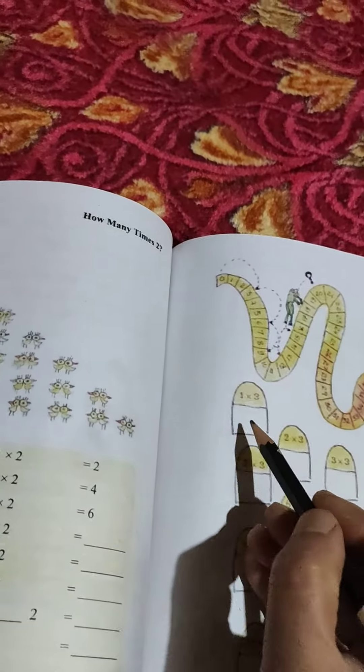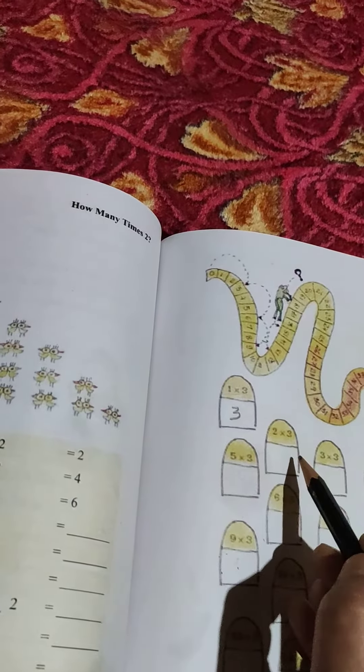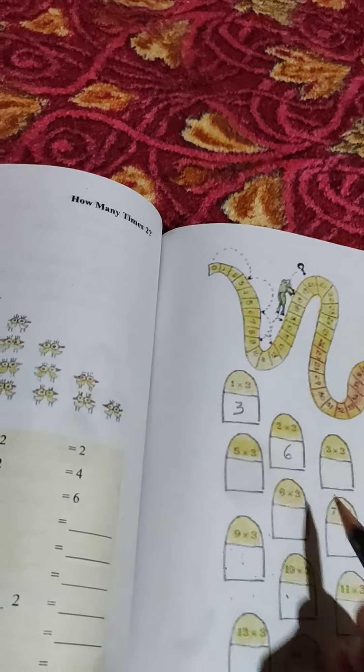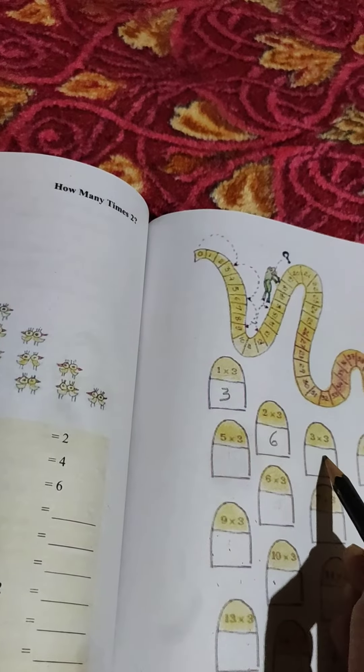Three ones are three. Two threes are six. Three threes are nine.